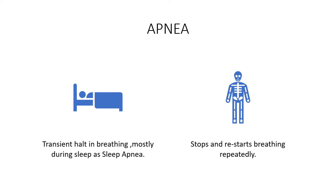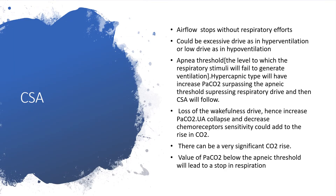Apnea is generally defined as a transient halt in breathing, mostly during sleep — that's why we call it sleep apnea. What is going to happen is there'll be stoppage and restarting, so the breathing will stop and restart repeatedly. In central sleep apnea, airflow stops without respiratory effort. There could be excessive drive, as in hyperventilation, or low drive, as in hypoventilation. So in central sleep apnea we deal with only two types: hyperventilation or hypoventilation.